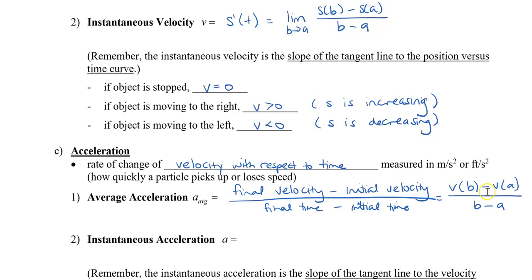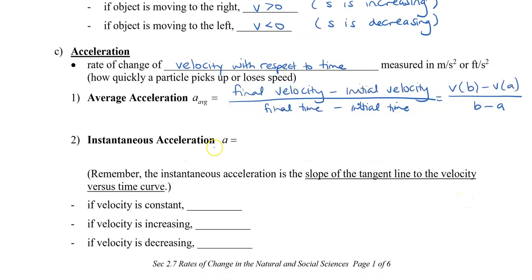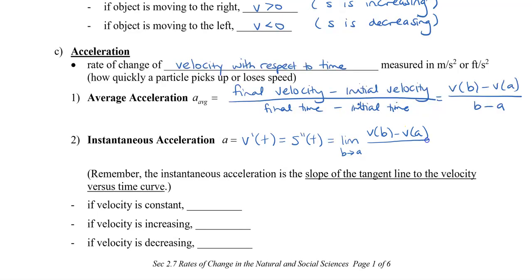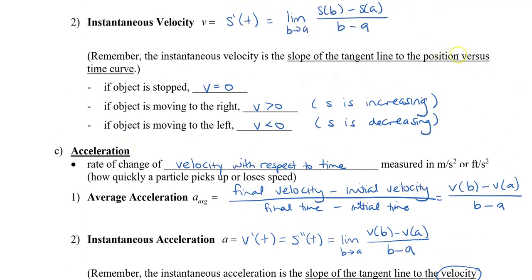The instantaneous acceleration a is the derivative of velocity, or you can say it's actually the second derivative of the position. If I want to calculate it using limits, I would be finding the limit of this average acceleration. Remember, the instantaneous acceleration is the slope of the tangent line — but this time it's going to be to the velocity versus time curve, as opposed to the position versus time curve.